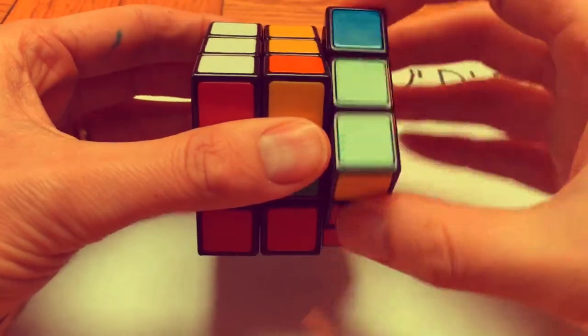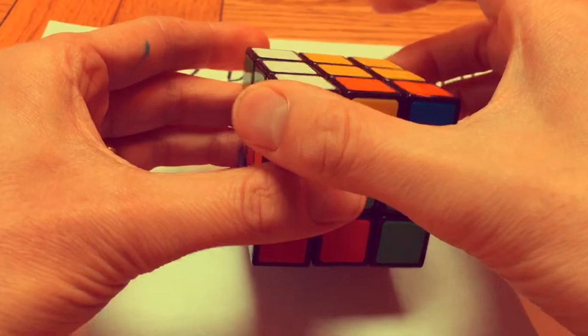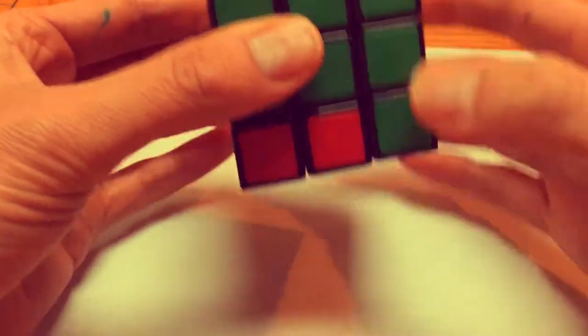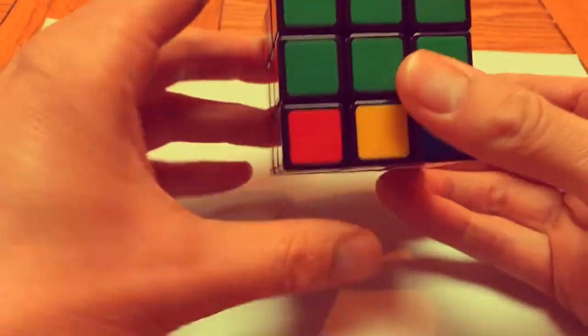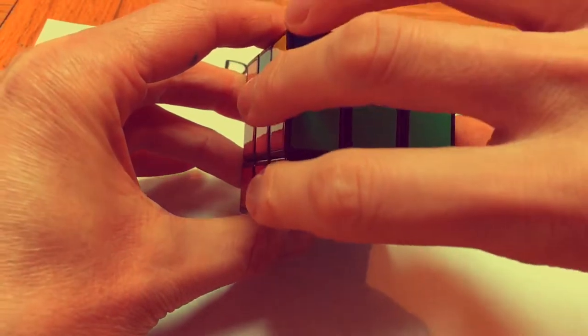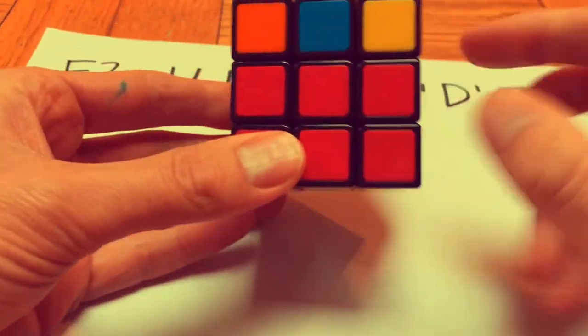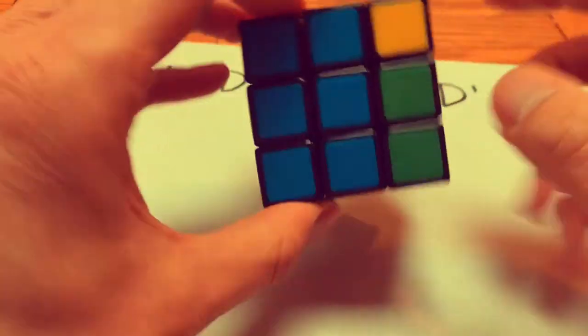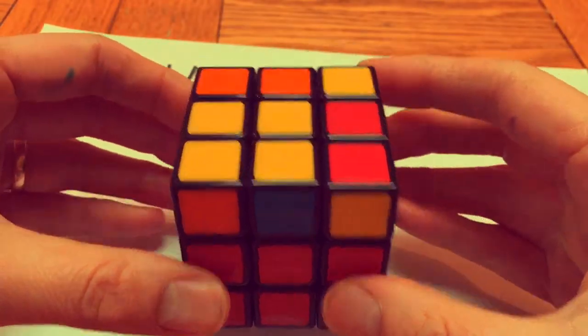This is the right hand turn that goes all the way around then you sort of put these back so to speak and turn it round and then as you see this piece and this piece have been swapped.